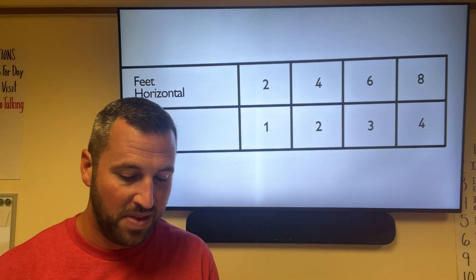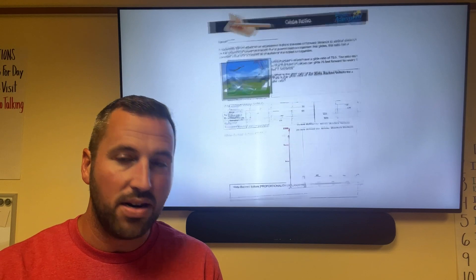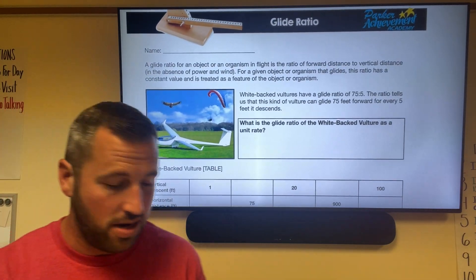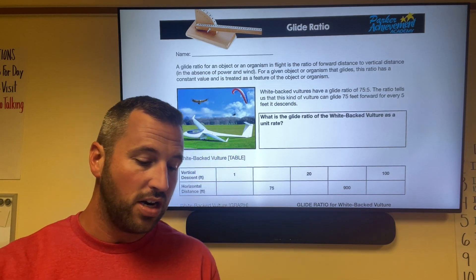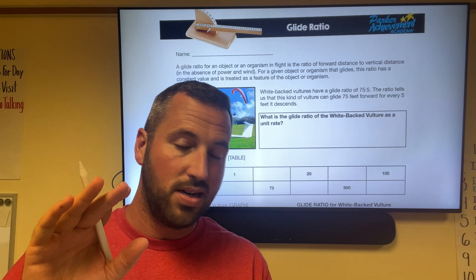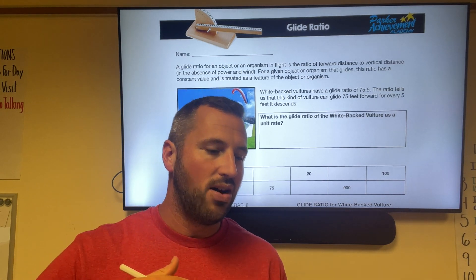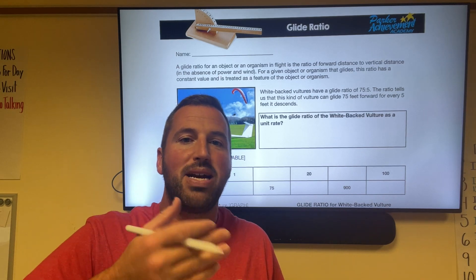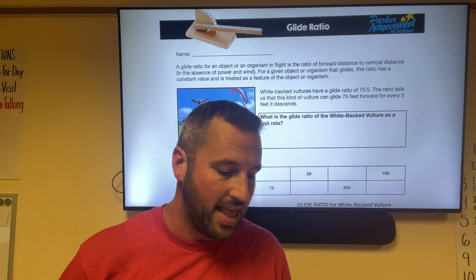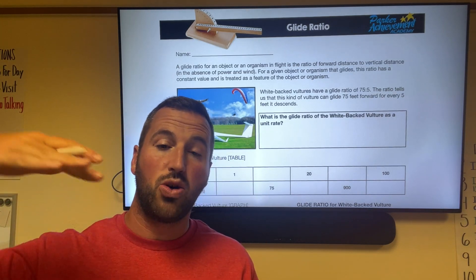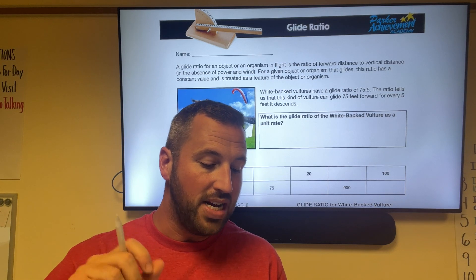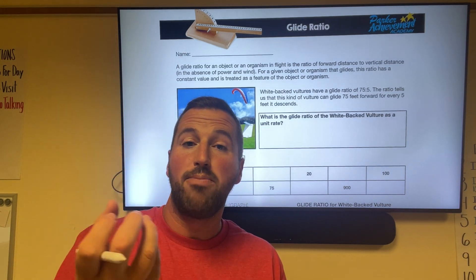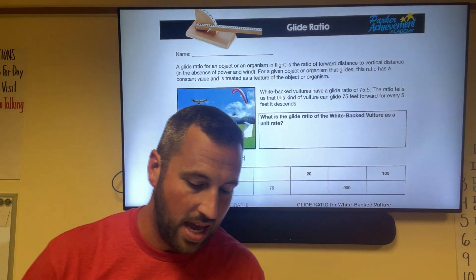Here's your document called 'Glide Ratio.' A glide ratio for an object or organism in flight is the ratio of forward distance to vertical distance, in the absence of power and wind. If you had a fan or updraft, the glide ratio wouldn't be consistent. For a flying squirrel, this ratio has a constant value — we've talked about a constant of proportionality — and is treated as a feature of the organism.